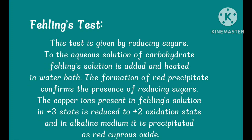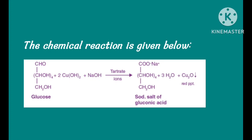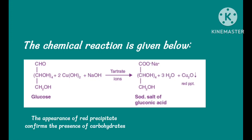Fehling's test: This test is given by reducing sugars. To the aqueous solution of carbohydrate, Fehling's solution is added and heated in a water bath. The formation of a red precipitate confirms the presence of reducing sugars. The copper ions present in Fehling's solution are reduced, and in alkaline medium it is precipitated as red cuprous oxide. The presence of red precipitate confirms the presence of carbohydrates.